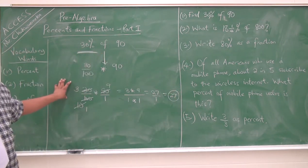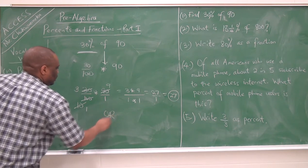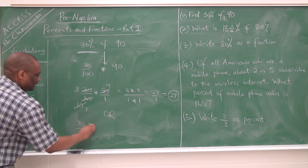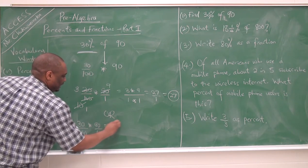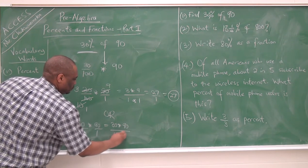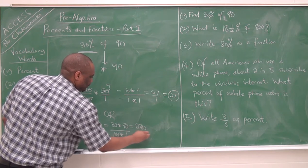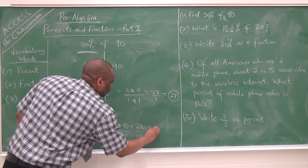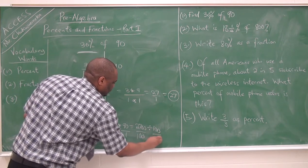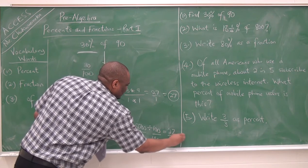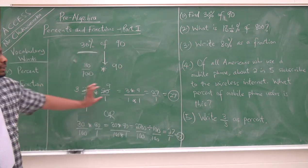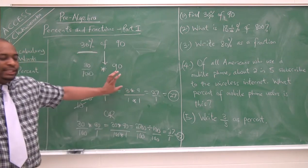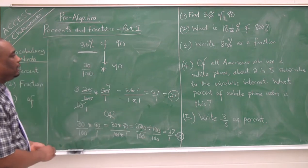You might not be used to that method, so here is another way. You can multiply then simplify: 30 over 100 times 90 over 1 gives you 30 times 90 over 100 times 1, which is 2700 divided by 100. Dividing both sides by 100 gives you 27 over 1, which is 27. So you can either simplify then multiply, or multiply then simplify. I choose the first method because it saves the stress of simplifying after multiplying. The answer is 27.